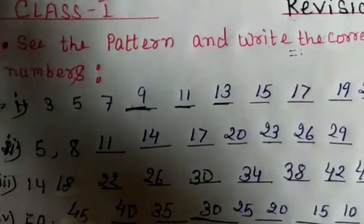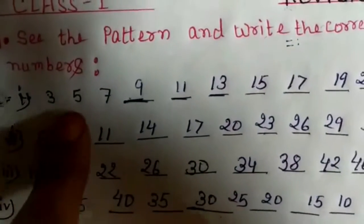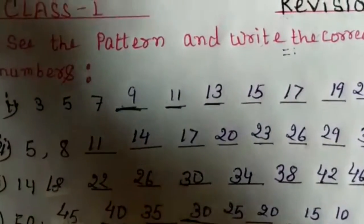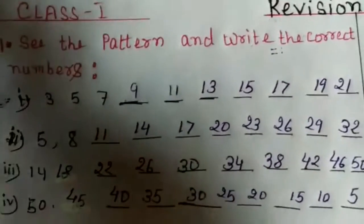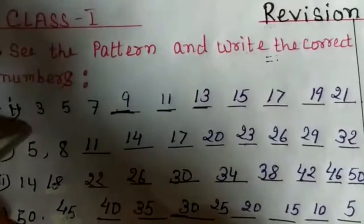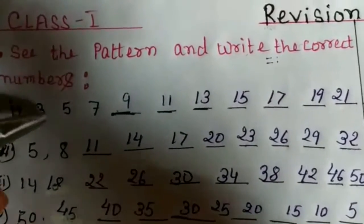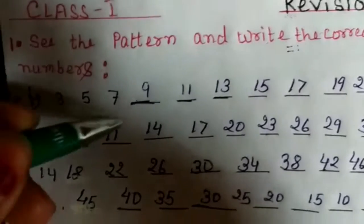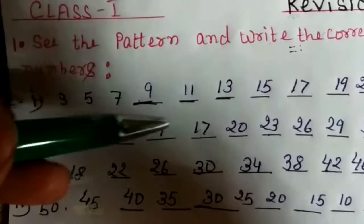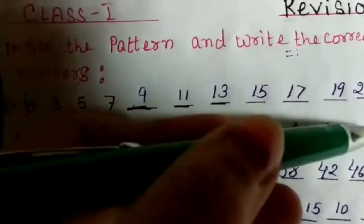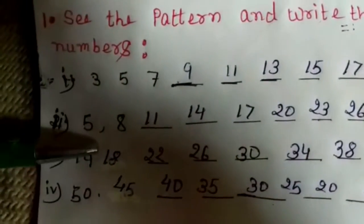So the first series — what was the pattern? We add 2 each time: 3, 5, 7, 9... the series continues straight. This series is complete. Next question.